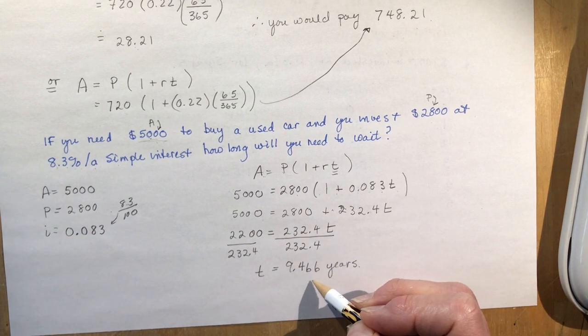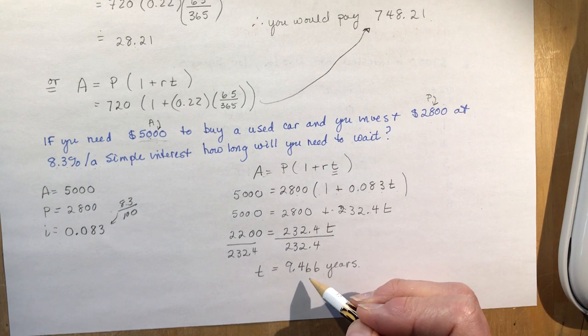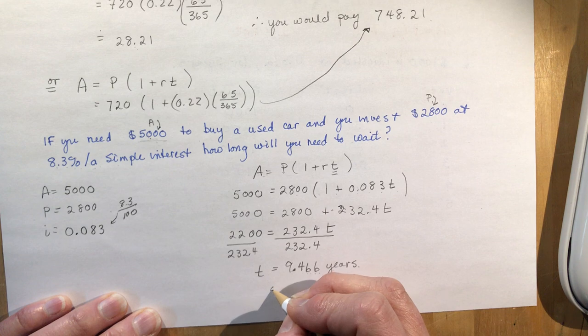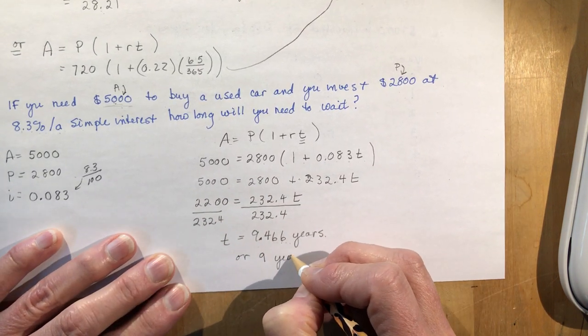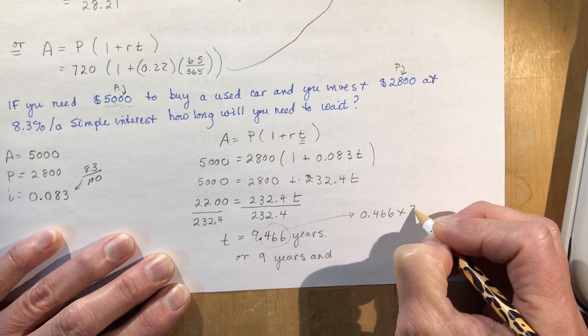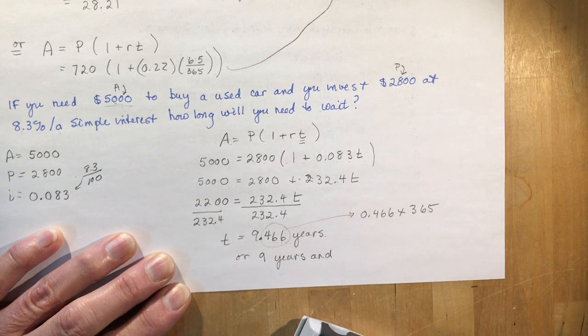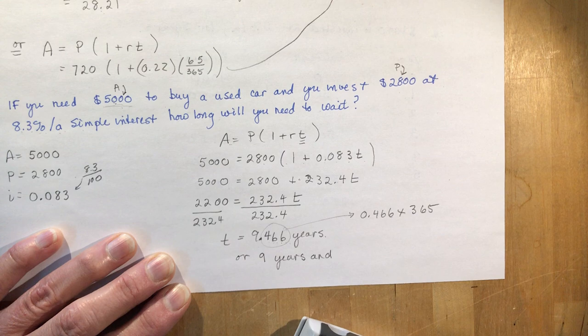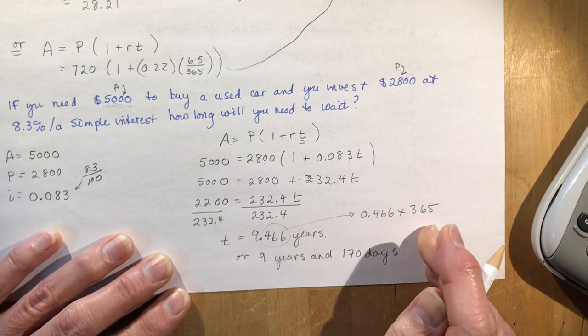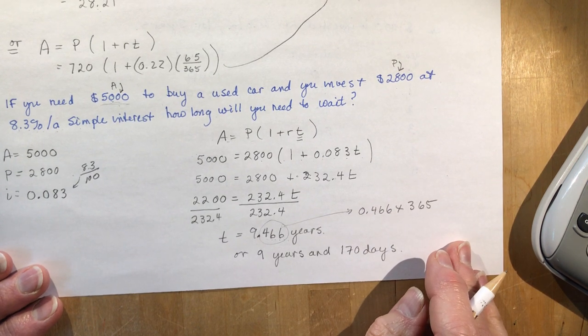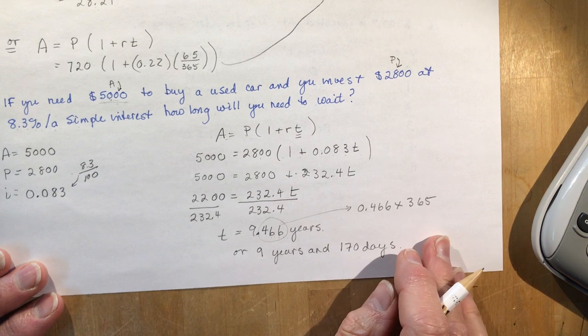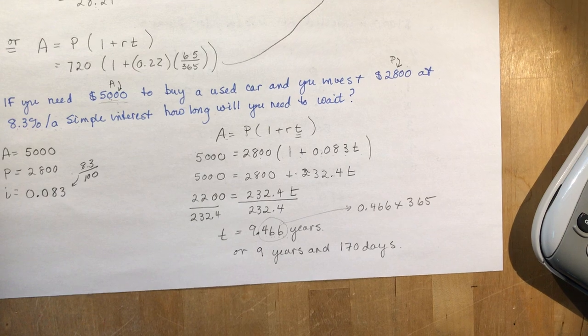I get T equals 9.466 years. If your teacher says in years, that would be your answer, approximately nine and a half years. Or if you want to know exactly how many days: take 0.466 and multiply it by 365. That gives 170 days. So nine years and 170 days. That's pretty much what Simple Interest is all about. It's very easy. It's linear growth as opposed to the next lesson where we're going to be doing exponential growth, which is the best way to make money off your money. Lesson one, a few more to go.